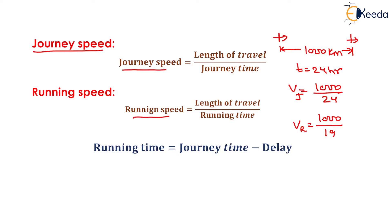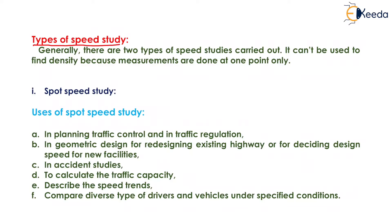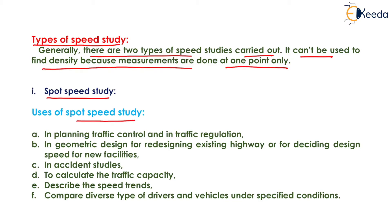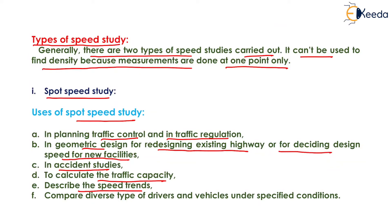Running speed is determined by length of travel divided by running time, and running time is determined by subtracting delay from journey time. There are two types of speed studies. Spot speed study cannot be used to find density because measurements are done at one point only. Uses of spot speed study include planning traffic control, traffic regulation, geometric design for redesigning existing highways or deciding design speed for new facilities, accident studies, calculating traffic capacity, describing speed trends, and comparing diverse types of drivers and vehicles under specific conditions.